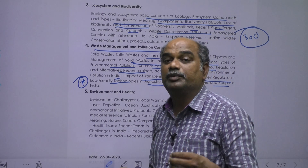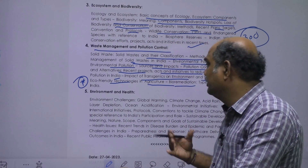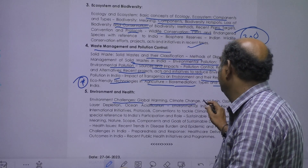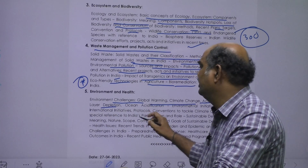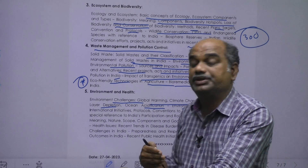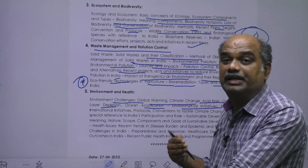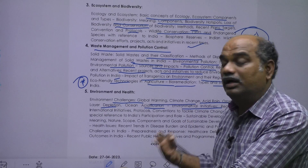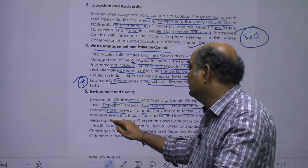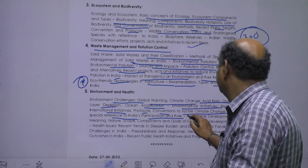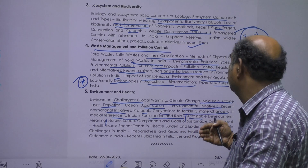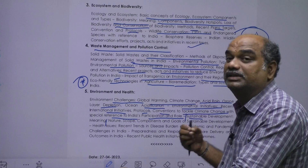Environmental and health challenges include global warming, climate change, acid rain, ozone layer depletion, and ocean acidification. Environmental initiatives by the Government of India at national levels and international initiatives — protocols and conventions to tackle climate change with special reference to India's participation and role — are covered. Sustainable development, its nature, scope, components, goals, and Sustainable Development Goals are also discussed.